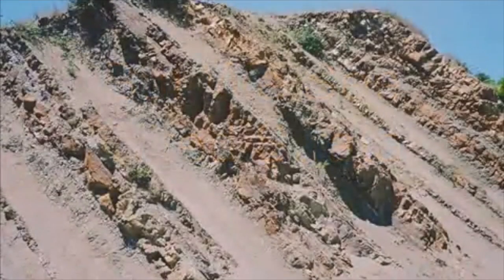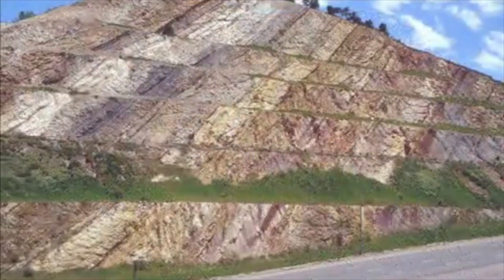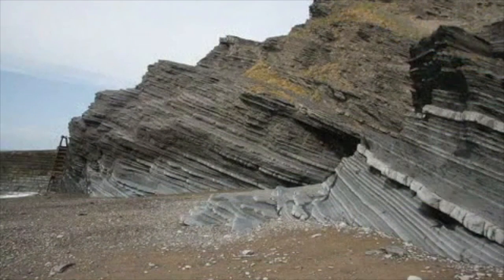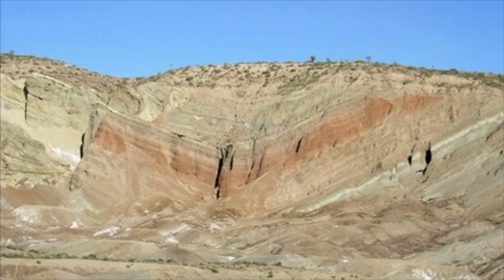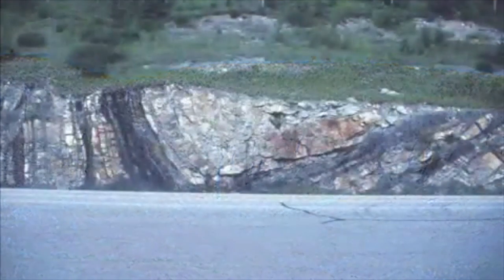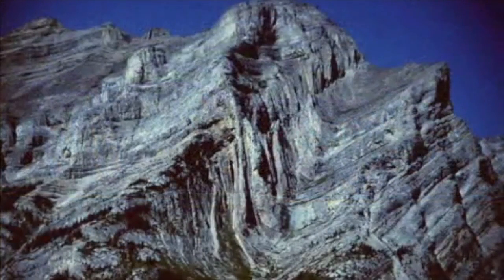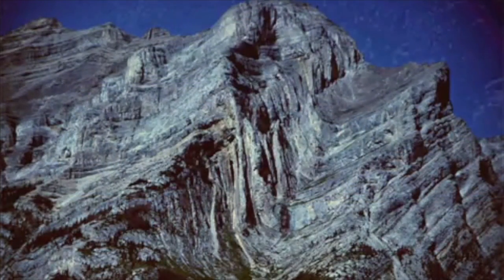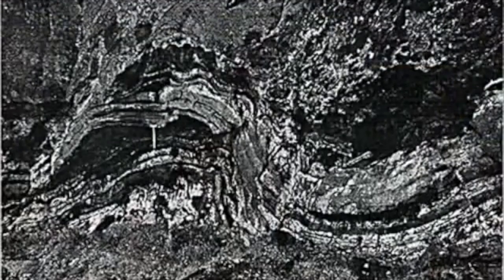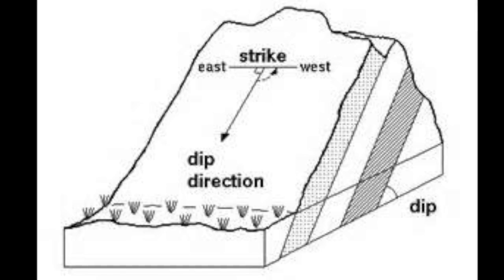All across the world, we can see layers of folded rock like those shown in these images. One thing geologists try to do is map the surface of the earth. In order to do so, they take measurements on the layers of rock to show which direction they are tilted and how they are angled. Some of the common tools they use to explain and show how beds of rock are bent are dip, dip direction, and strike. Let's take a closer look at what these words mean.